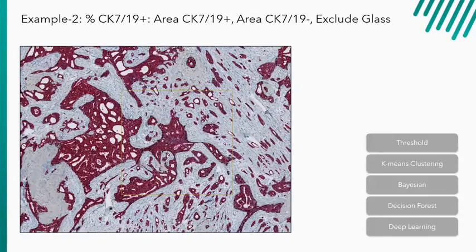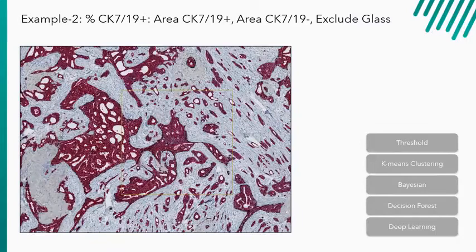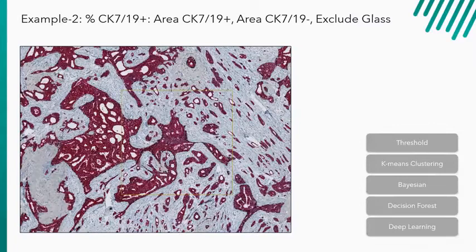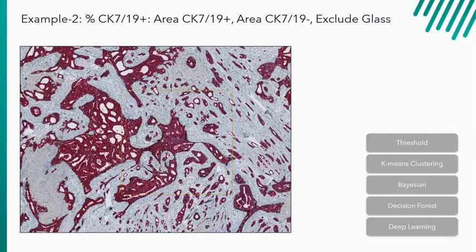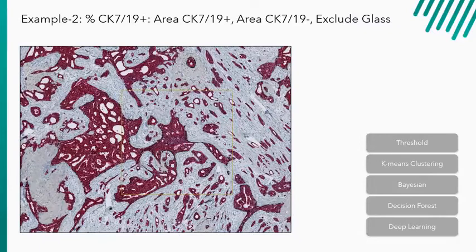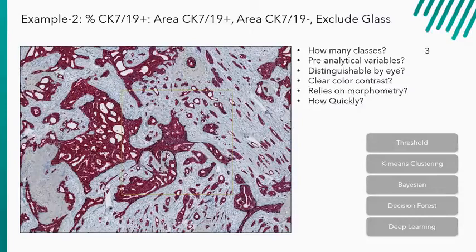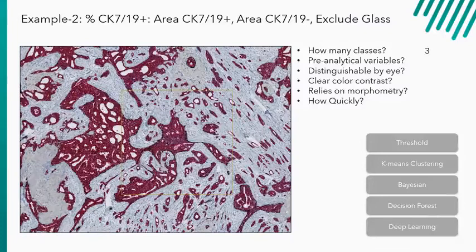So in this example, we want to know what regions or percent of the tissue is invasive or cancerous tissue, which is a CK7, 19 positive. To do this, we need to quantify the areas of CK7 and 19 positive tissue and the areas of CK7, 19 negative tissue. We also want to recognize and exclude the glass areas so that we get a good denominator in terms of our tissue sample. If we run down our questions, how many classes do we want to separate? In this case, we have three. We have a CK7, 19 positive, a CK7, 19 negative, and the glass.